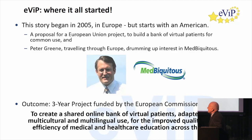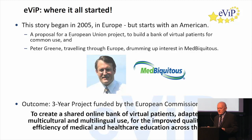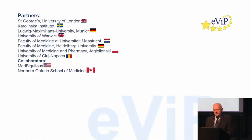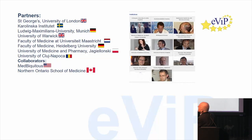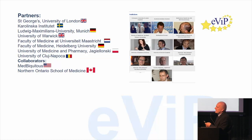The grant was to create a shared online bank of virtual patients adapted for multicultural, multilingual use for improved quality and efficiency of medical and healthcare education across the EU. The partners included St. George's in the UK, Sweden, Germany, Holland, Poland, Romania, and collaborators from Ubiquitous and the Northern Ontario School of Medicine. This was the beginning of the partnership — all Western Europe and a couple of Americans, essentially all the developed countries.